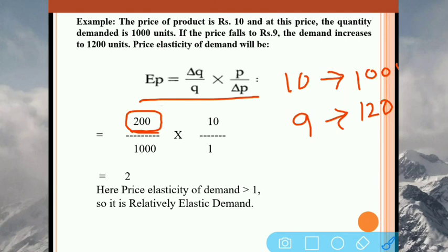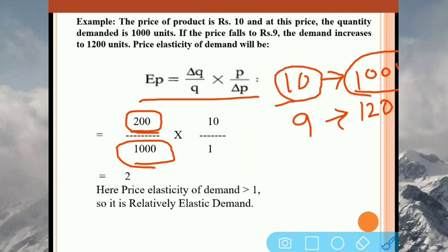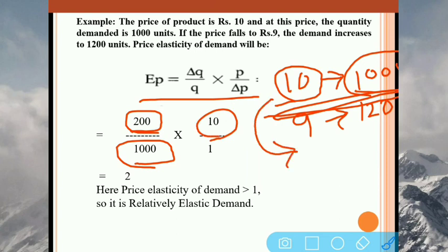Change in demand: 1000 to 1200, so delta Q equals 200. Q, the original demand, is 1000. Multiply by P, the original price, which is 10. Delta P, the change in price: from 10 to 9, so the change is 1. Remember: the first values given are original — price 10, demand 1000 — and the new values are price 9, demand 1200. So: 200 upon 1000, multiplied by 10 upon 1. After simplifying, the answer is 2.